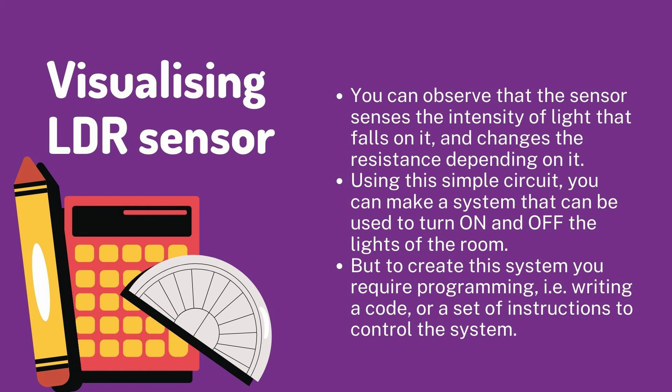When visualizing the LDR sensor, you can observe that the sensor senses the intensity of light that falls on it and changes the resistance depending on it. Using this simple circuit, you can make a system that can be used to turn on and off the lights of a room. But to create this system, you require programming — for example, writing a code or a set of instructions to control the system.